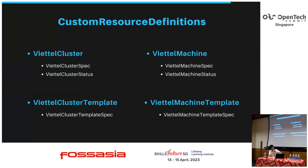For the VTELCluster, we have defined the components such as VPC, subnet, region, load balancer, security group, listener, API server port, and control plane endpoint. We have also defined the VTELCluster spec and VTELCluster status. For the VTELMachine, we have defined components such as server, region, image, and volume size. The VTELMachineTemplate allows the Cluster API Provider VTEL to integrate with other cloud providers.